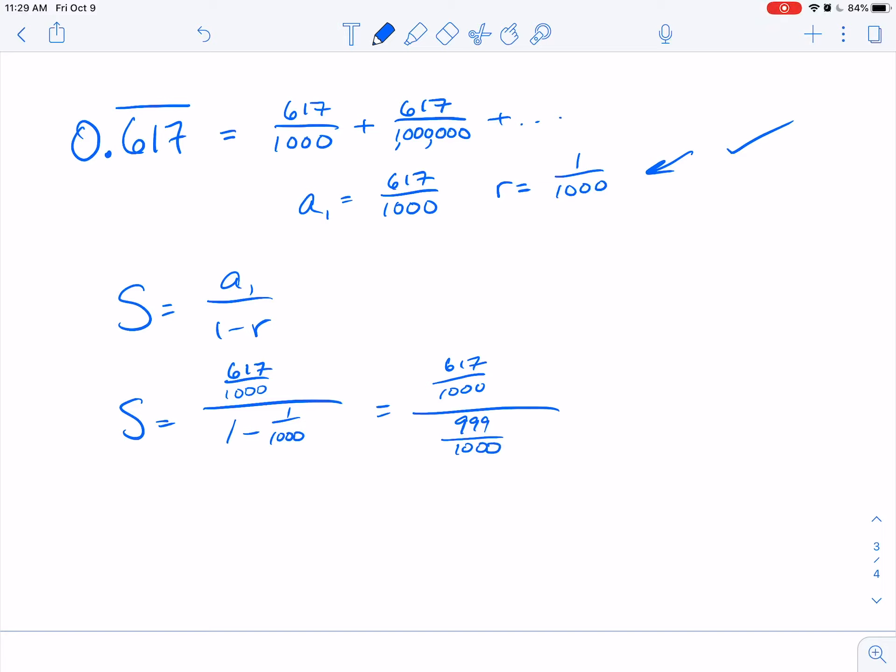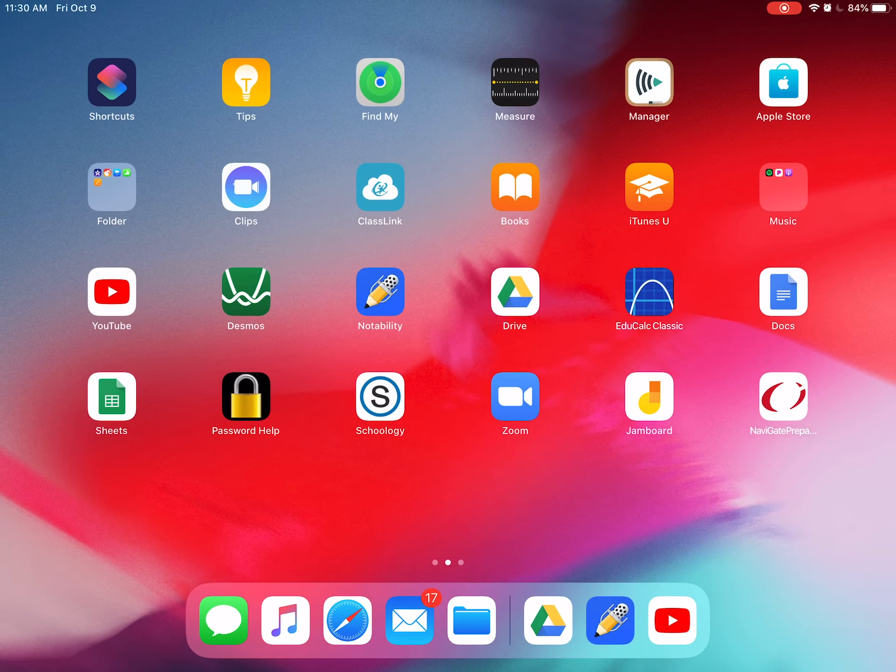There we go. Notice the thousands - I could multiply this by 1000 over 1000, and those would clear out. So I get 617 divided by 999.